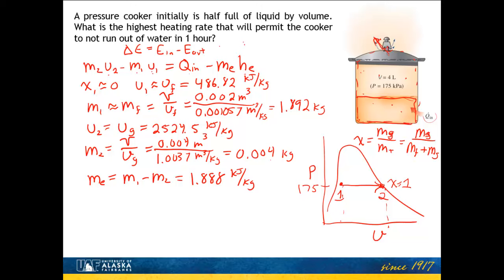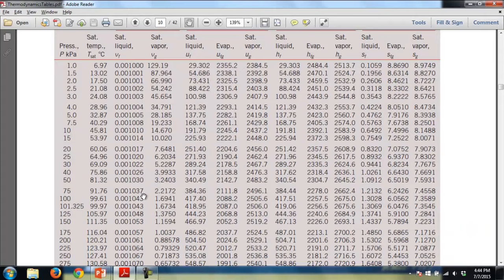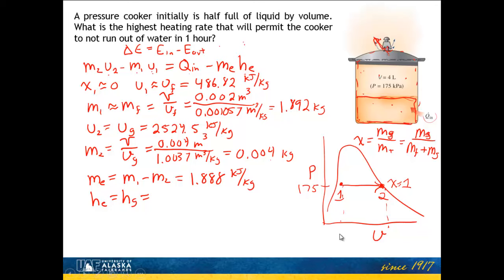Now if I can get my last thermodynamic property, H exiting, I can solve for Q in. The enthalpy leaving is that of saturated vapor, always going out the top here. So I need H sub G from the tables. At 175, H sub G is 2700.2 kilojoules per kilogram.